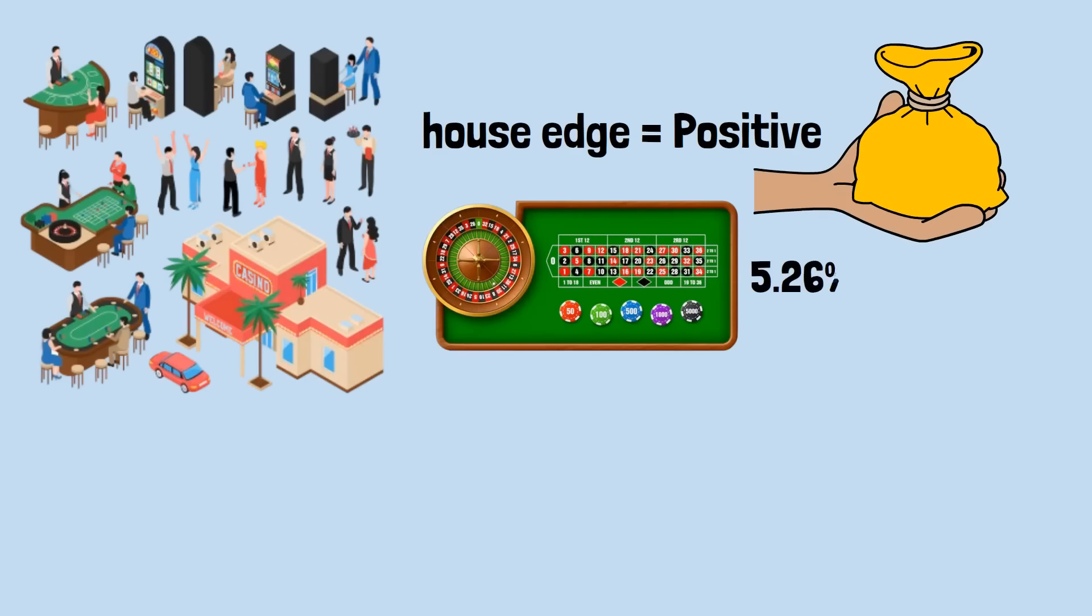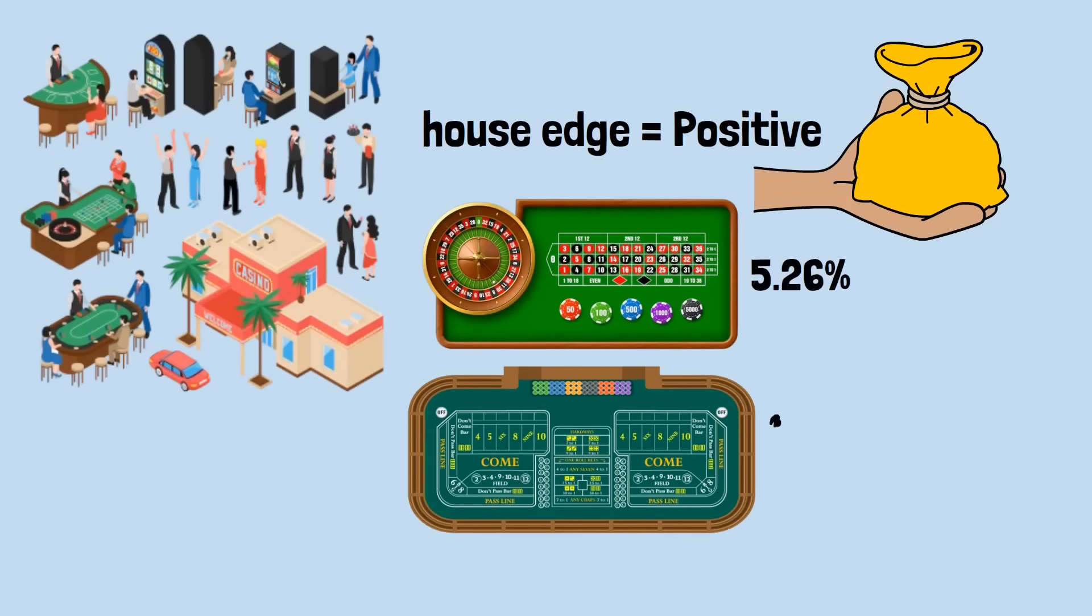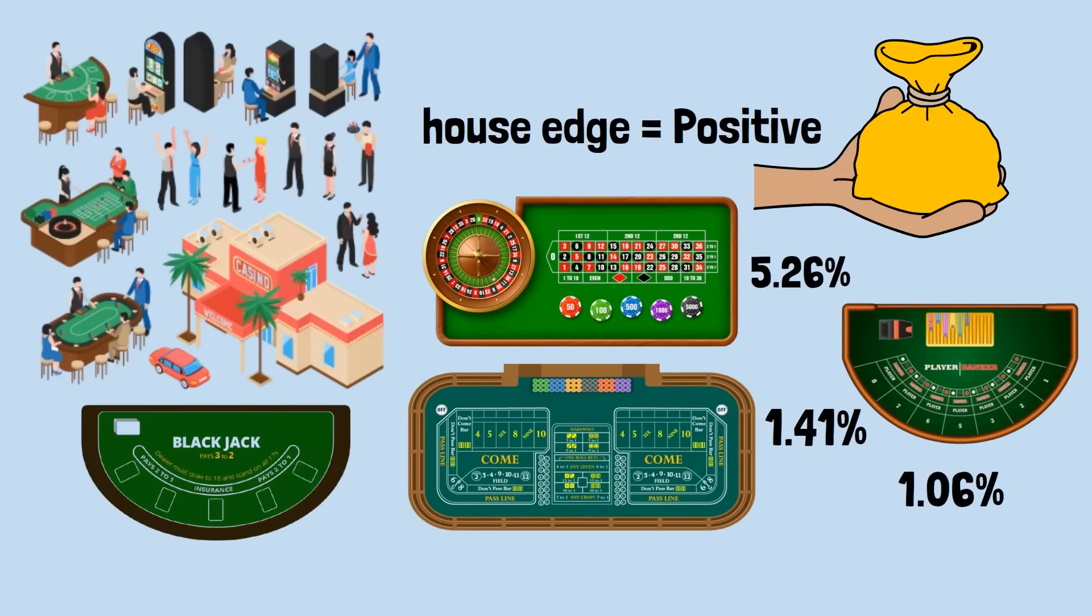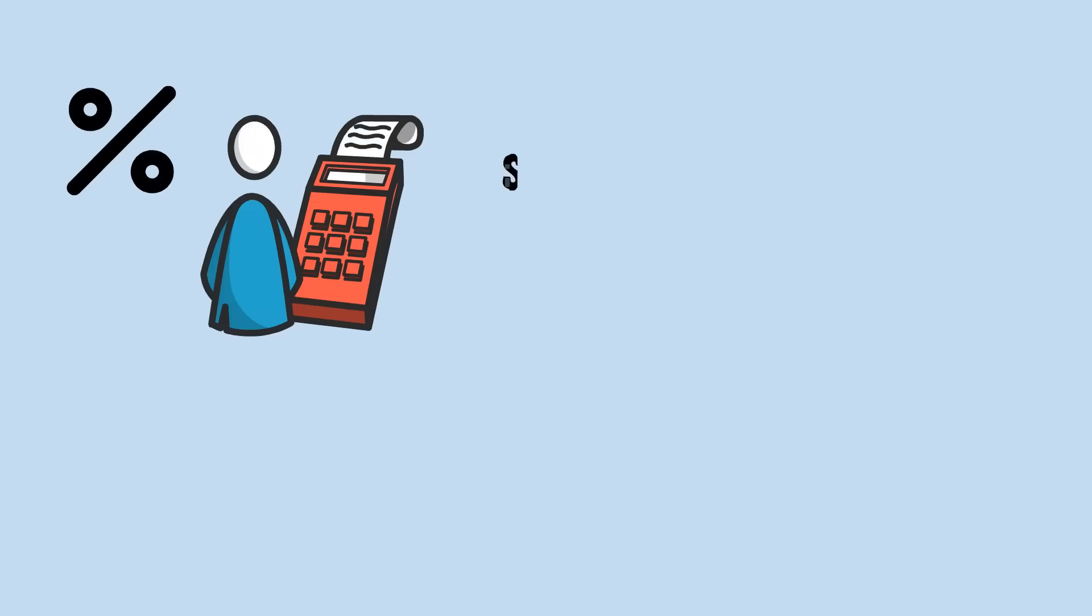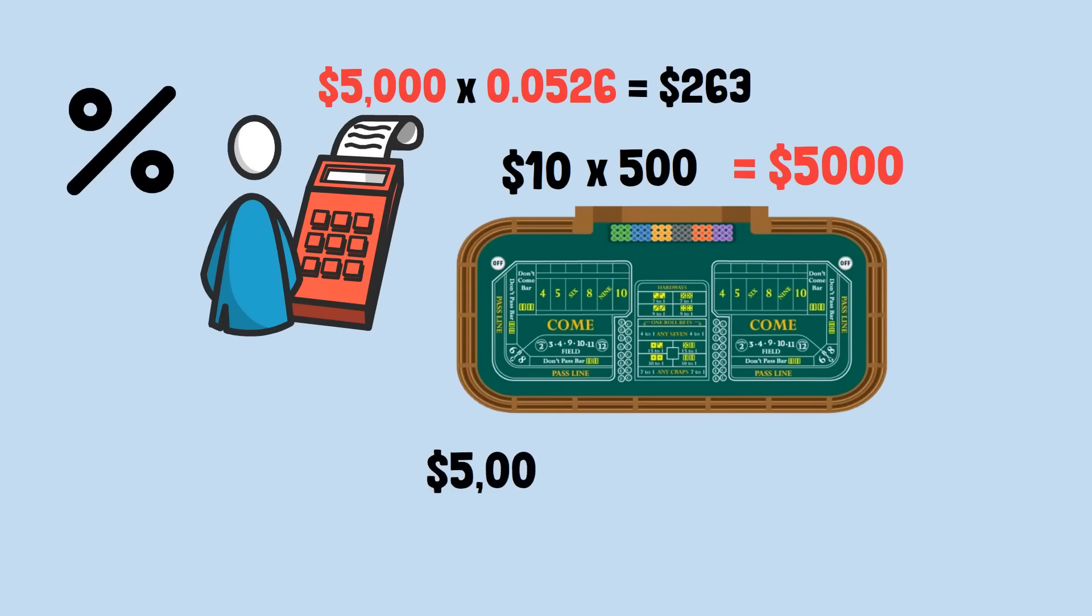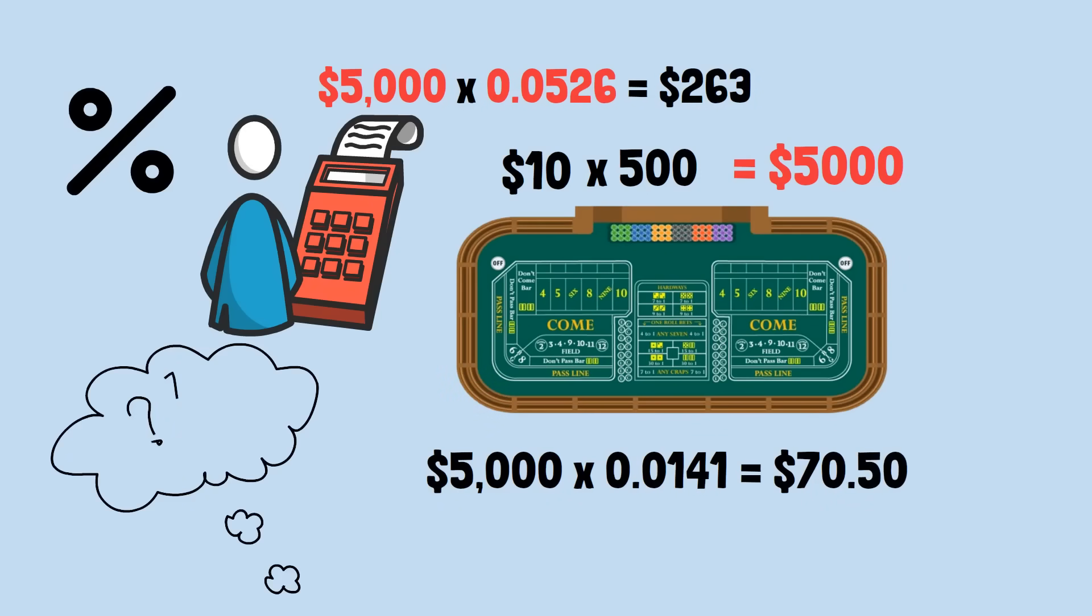Here are some common examples: Double-zero roulette 5.26% house edge, Craps 1.41% house edge, Baccarat 1.06% house edge, Blackjack 0.5% house edge. These percentages allow you to calculate your expected losses precisely. If you bet $10 per spin for 500 spins at roulette, you'll wager $5,000 total. Your expected loss is $5,000 times 0.0526 equals $263. If you made the same bets playing craps instead, $5,000 times 0.0141 equals $70.50. The mathematics is identical regardless of the payout structure. Whether you bet on red with 1-to-1 payout or a single number with 35-to-1 payout in roulette, your expected loss per dollar wagered remains exactly 5.26%.